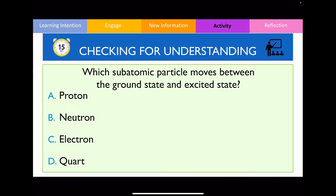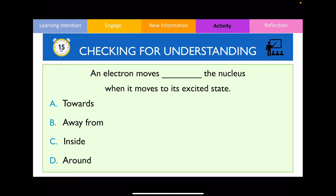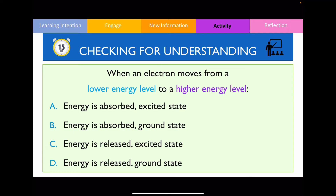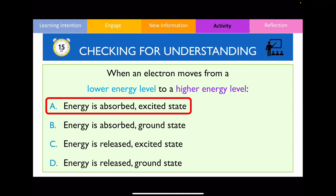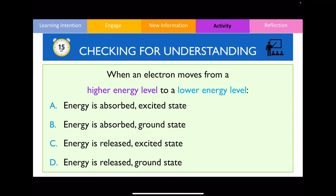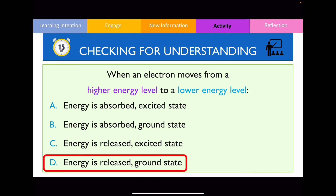The first question asks: which subatomic particle moves between the ground state and excited state? The correct answer is C — the electron. The second question asks you to choose the correct word matching a description about moving to the excited state, which only occurs when electrons move away from the nucleus. The third question asks what happens when an electron moves from a lower energy level to a higher energy level — the correct answer is that energy is absorbed and the atom enters the excited state. The fourth question: when an electron moves from a higher energy level to a lower energy level, energy is released and the atom returns to the ground state.